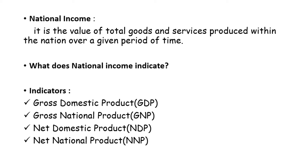We calculate national income in these terms: it is the value of total goods and services produced within the nation over a given period of time. The value of goods produced in a country plus the value of services produced in that country together constitute national income. Usually, national income is calculated for one financial year.